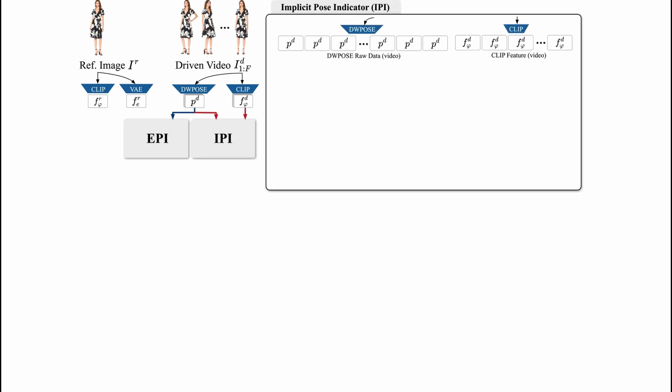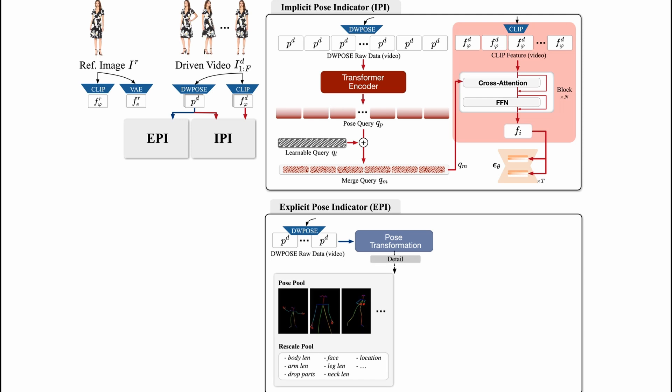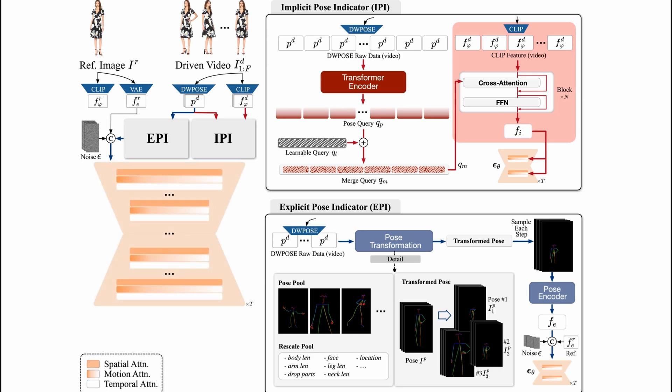The first is through what's called the Implicit Pose Indicator or IPI. This step tells the system how the character should move, focusing on overall motion. The second step is the Explicit Pose Indicator, which refines the character's specific poses. Once these two steps are done, both sets of data are combined with your original reference image and the whole system goes through a diffusion model. This model generates the frames for the final video, bringing your character to life in motion.